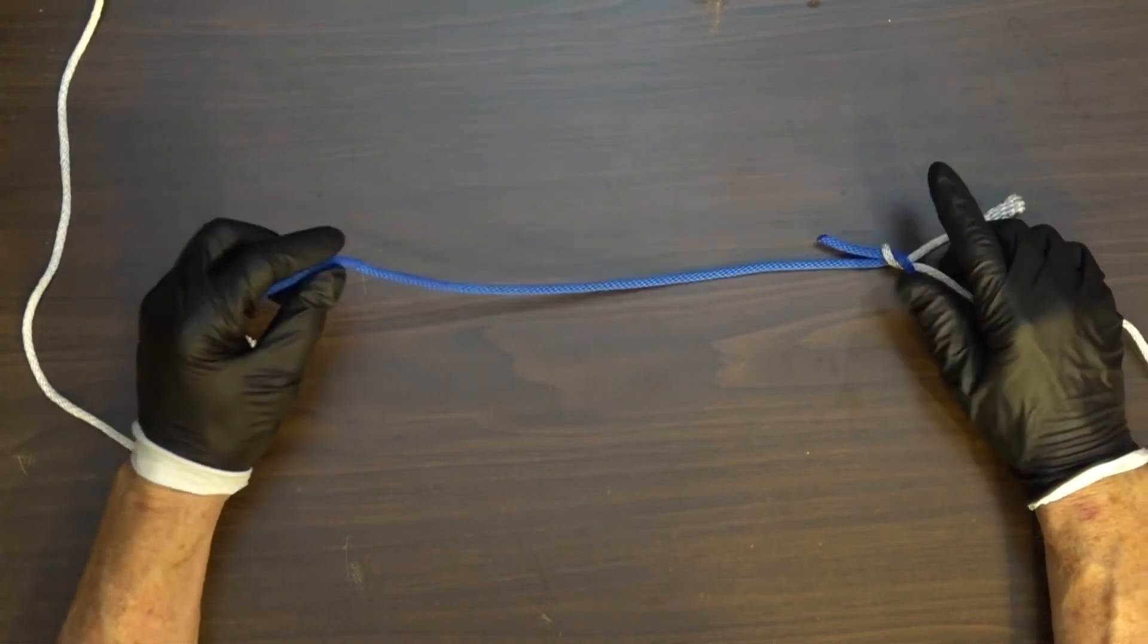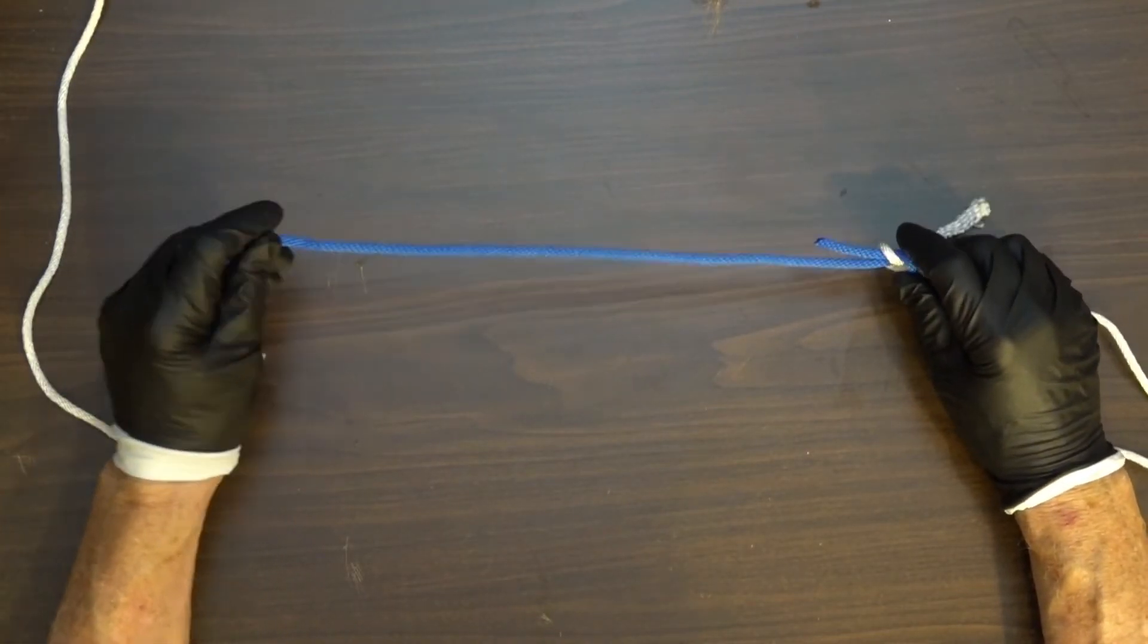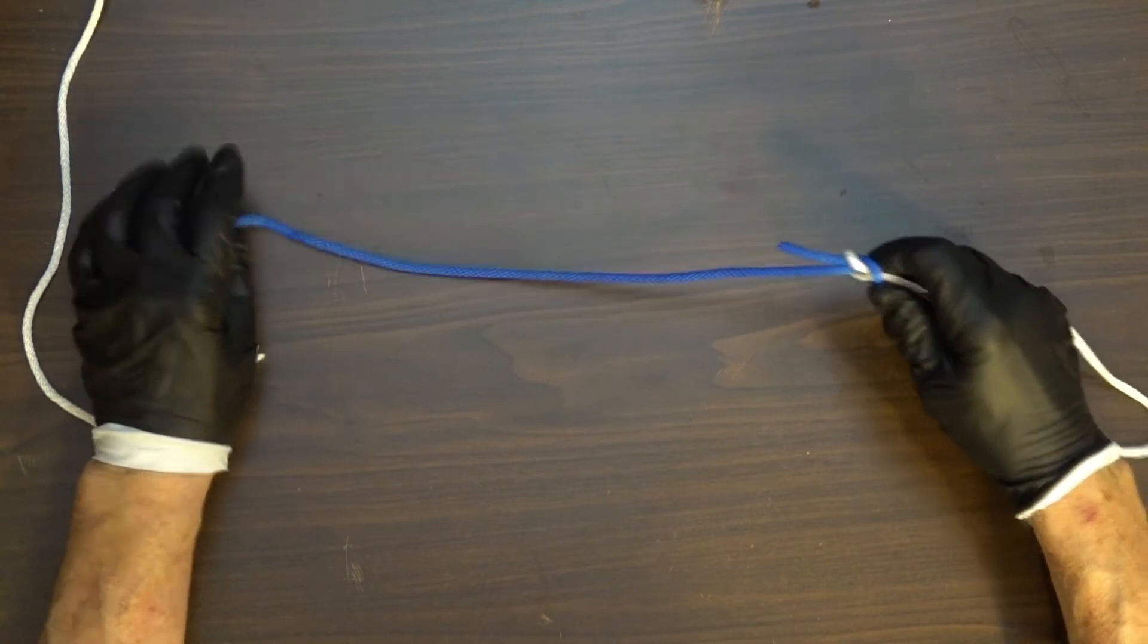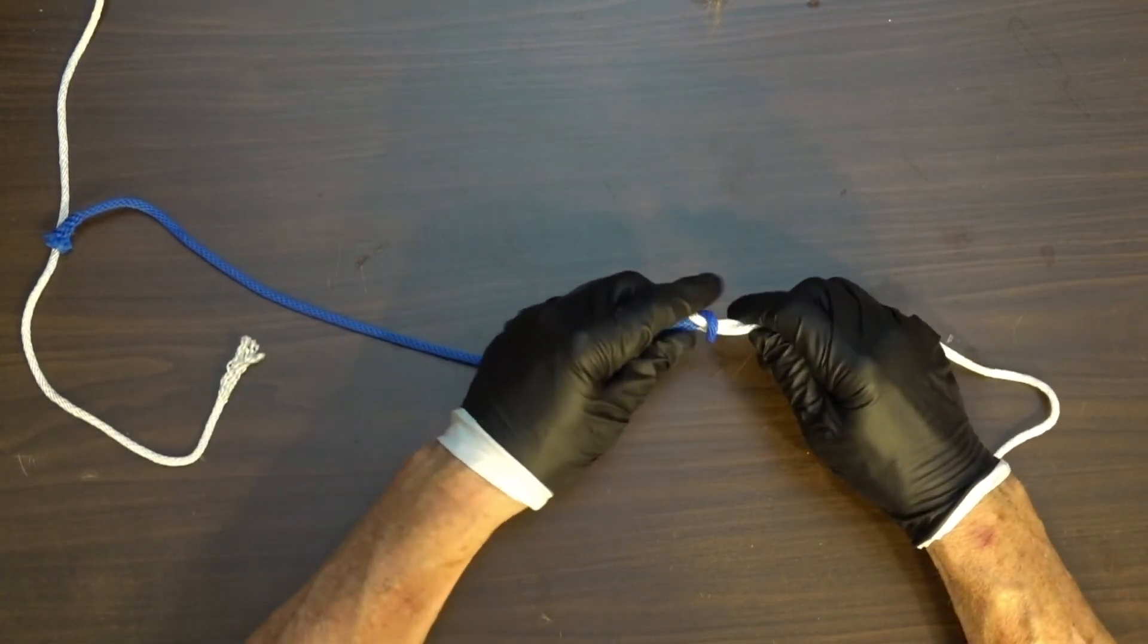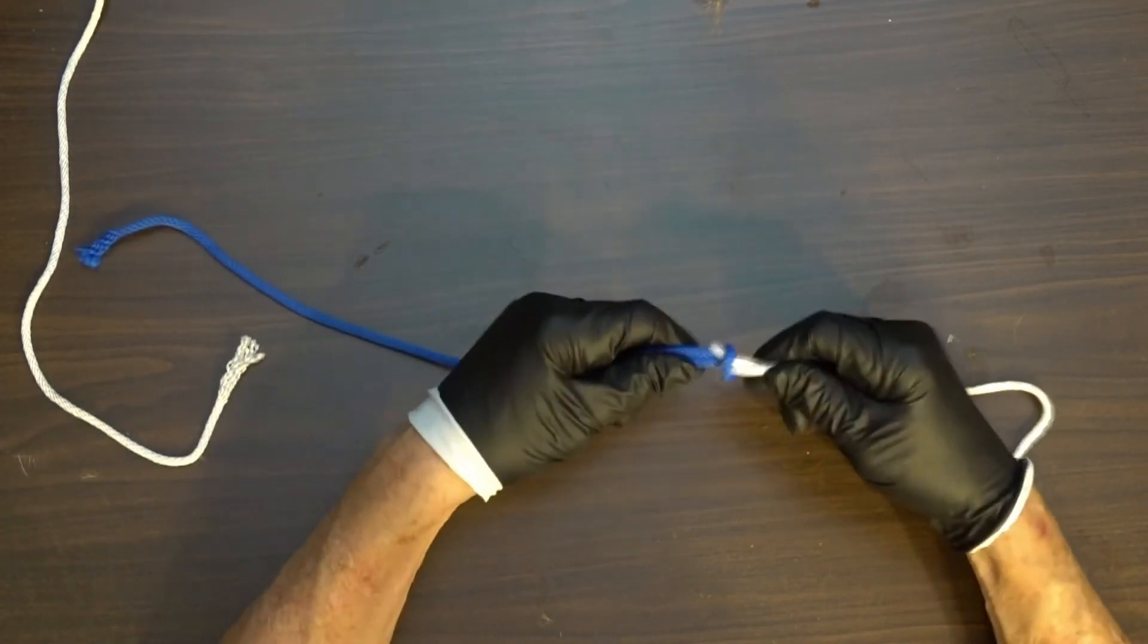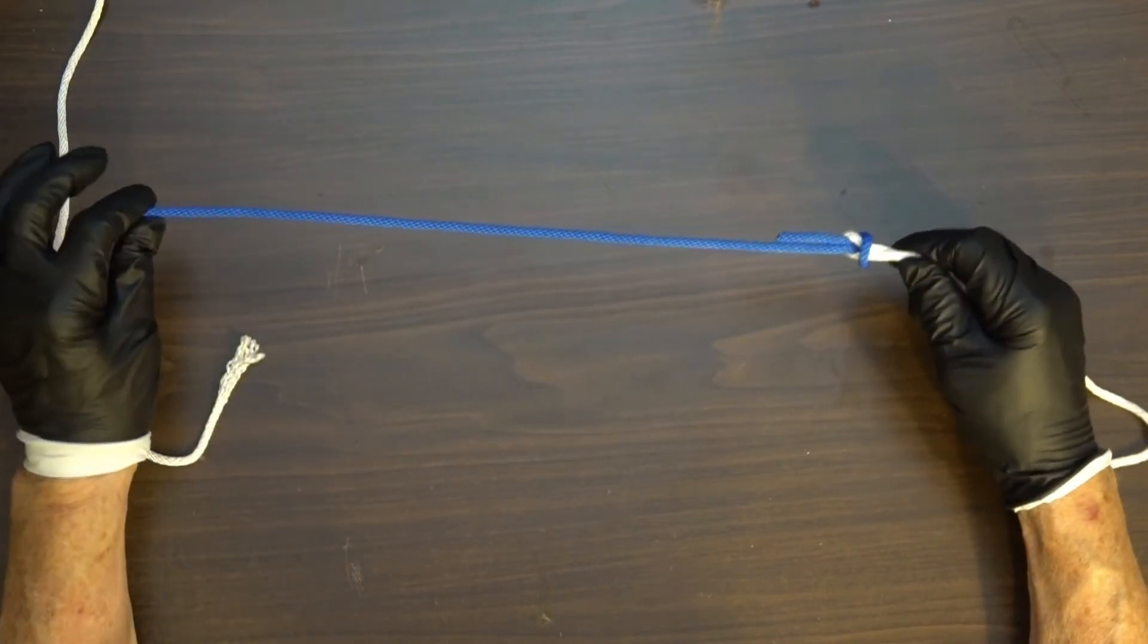You don't ever want to use a granny knot. It's a very unreliable knot. Square knot is much better. You may even want to use a different knot than a square knot because sometimes that can even slip loose, but it's definitely much better than a granny knot.